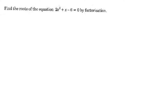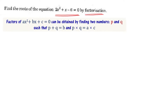Find the roots of the equation 2x² + x - 6 = 0 by the factorization method. It is a quadratic equation. The factorization method states that if we have a quadratic equation ax² + bx + c = 0, then factors can be obtained by finding two numbers p and q such that p + q = b (coefficient of x) and p × q = a × c (product of the remaining coefficients).